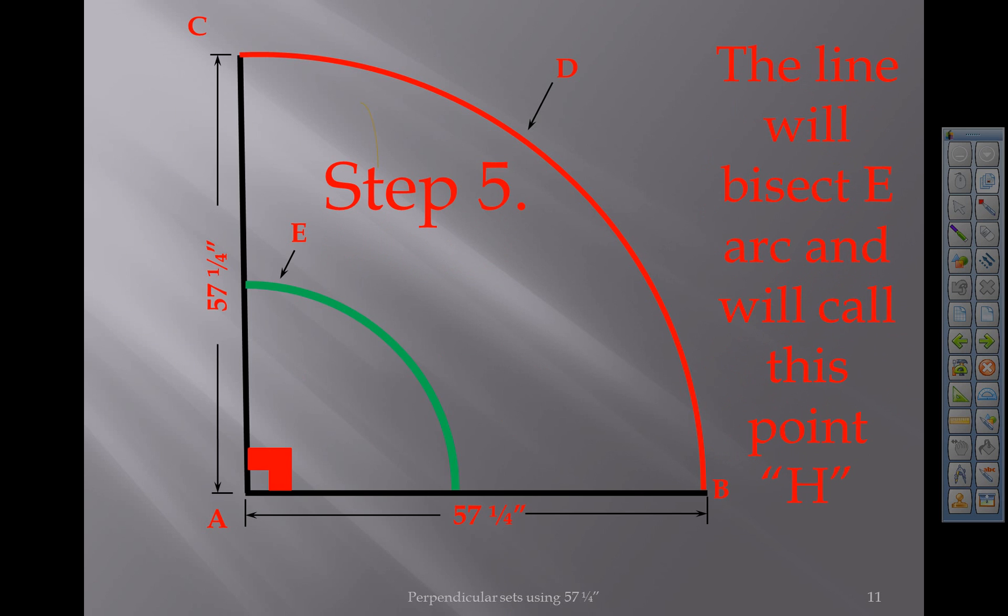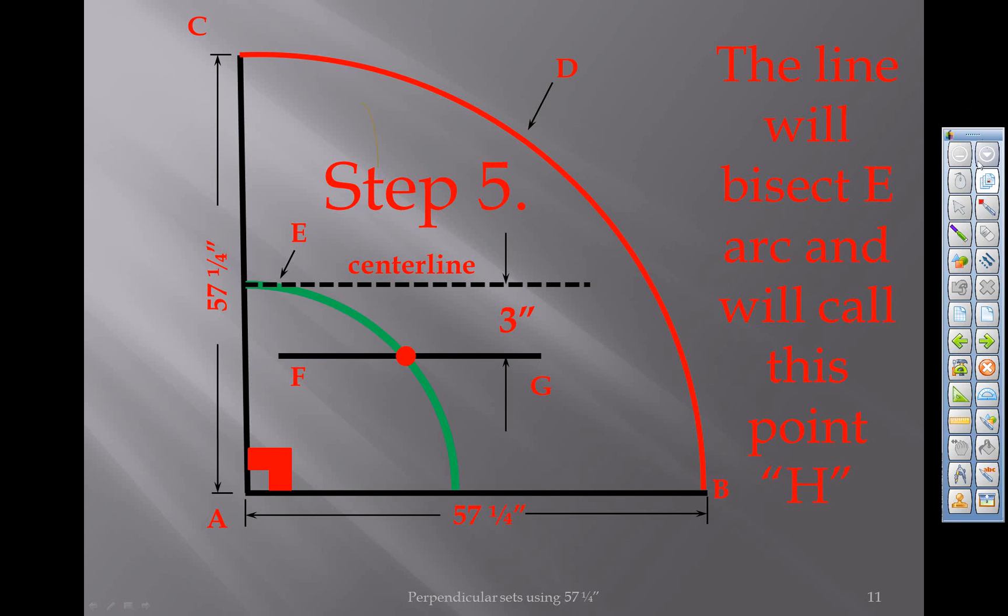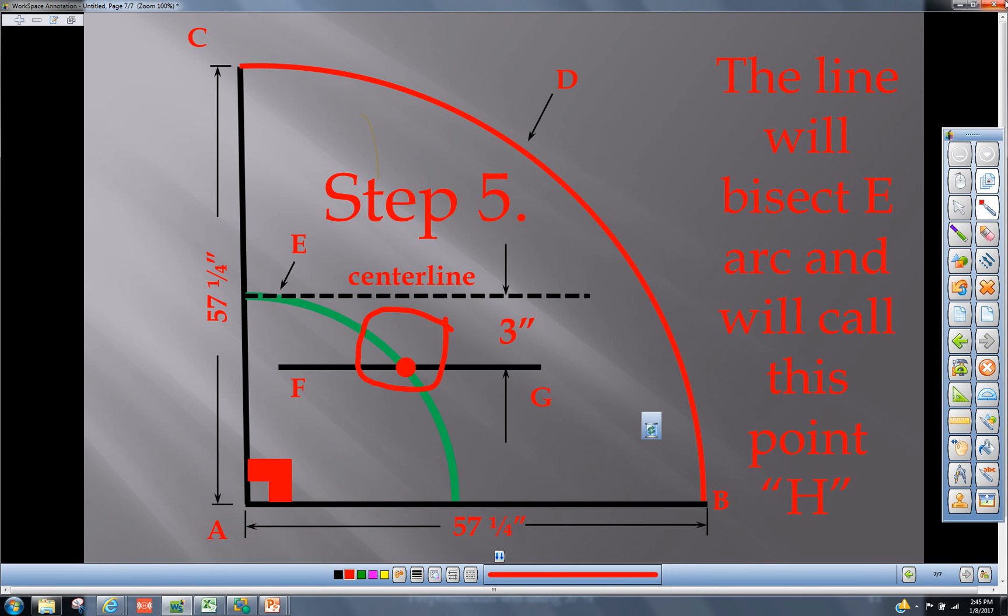The line will bisect E arc and we'll call this point H. This is very important, that intersection right there.